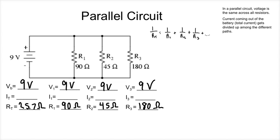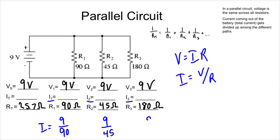So to get the currents now, we go back to our good old friend V equals I R. We're solving for current this time, so it's going to be voltage divided by resistance. So for I1, we have 9 divided by 90. For this one, we have 9 divided by 45. For this one, we have 9 divided by 180. You plug those into your calculator. Yes, I needed to plug that into my calculator.